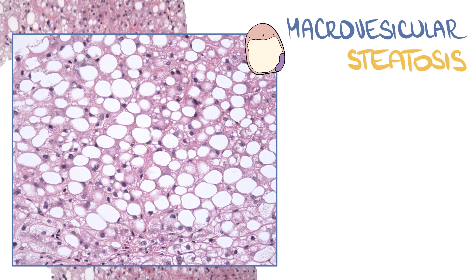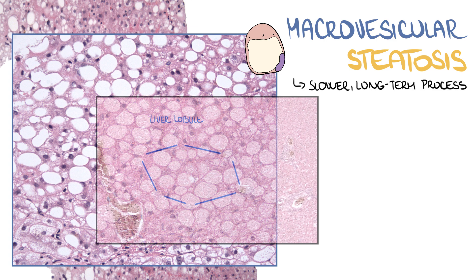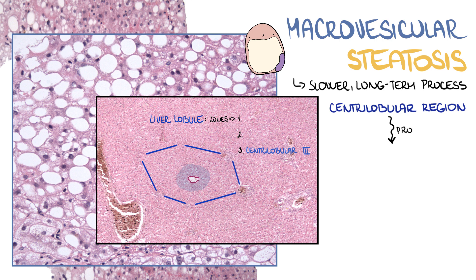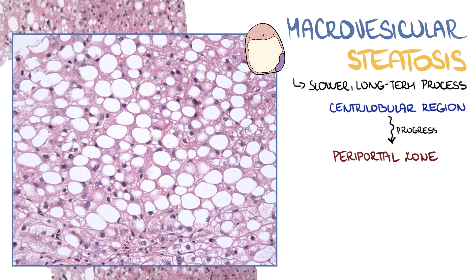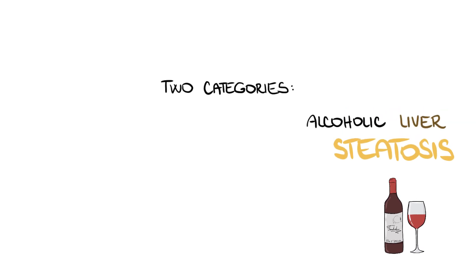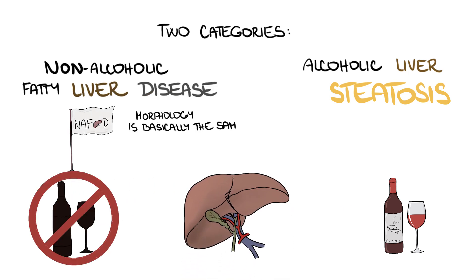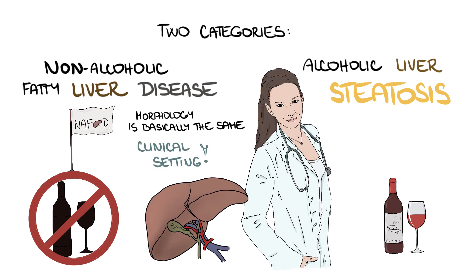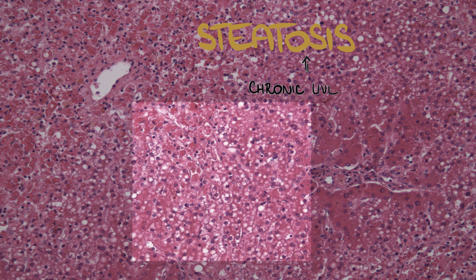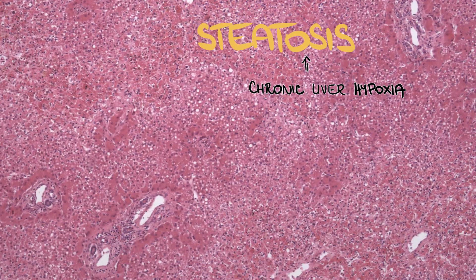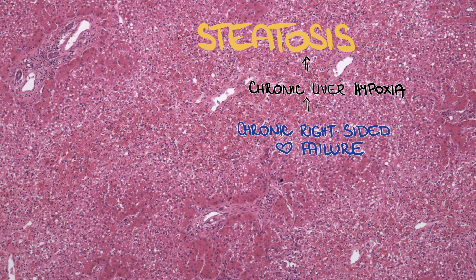Macrovesicular steatosis reflects a slower, long-term process. It usually begins in the centrilobular region and progresses towards the periportal zone. The most common diseases associated with macrovesicular steatosis are obesity, type 2 diabetes, and alcoholic hepatopathy. We tend to group those diseases into two categories: alcoholic liver steatosis and non-alcoholic fatty liver disease. Morphology of the given diseases is basically the same, and a clinical setting is necessary to determine a specific diagnosis. Apart from that, steatosis also develops as a result of chronic liver hypoxia — an example being patients with chronic right-sided heart failure. Remember the so-called nutmeg liver.